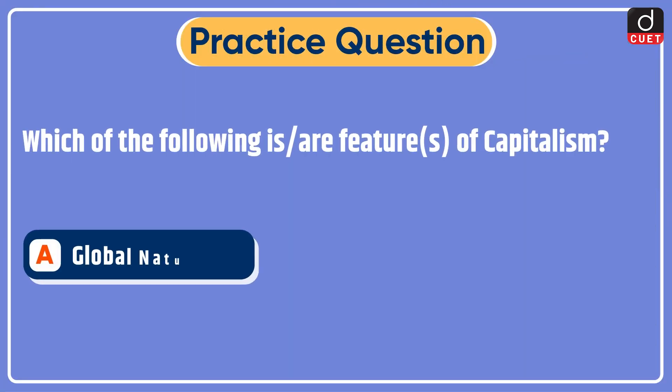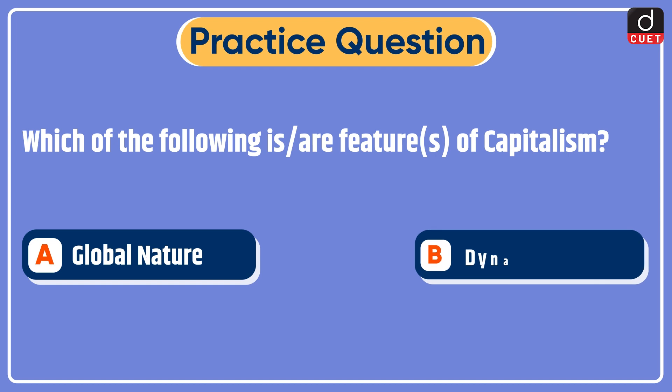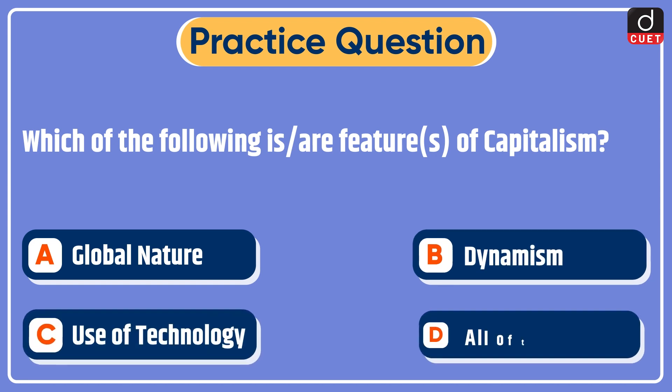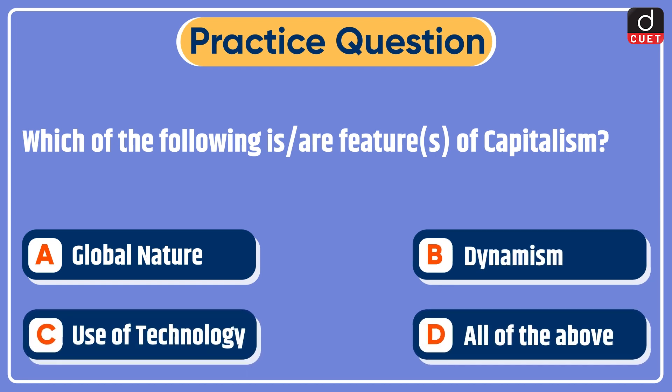Now it's time for the practice question: which of the following is or are feature or features of capitalism — global nature, dynamism, use of technology, or all of the above? Send the answer in the comment section. Stay tuned for the next episode. Thanks for watching.